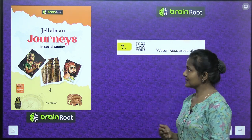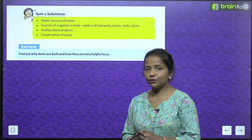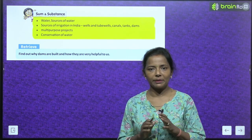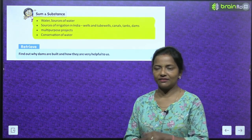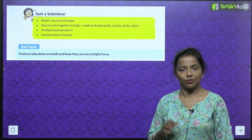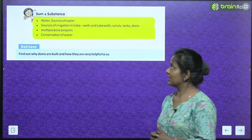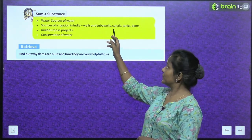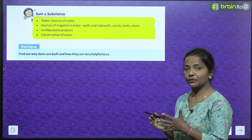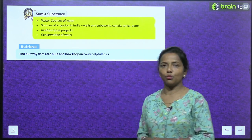Before we start, let's read the substance — the topics we are going to read in this chapter. Water, sources of water, sources of irrigation in India — wells and tube wells, canals, tanks, dams. These are all sources of irrigation. And multipurpose projects and conservation of water.